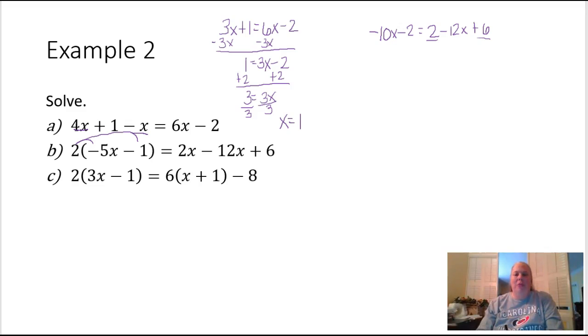Part B take 2. After we distribute the 2 into the parenthesis we have negative 10x minus 2 equals 2x minus 12x plus 6. If we combine our like terms over here, that's going to be this one and this one rather than the 2 and the 6. This is going to give me negative 10x minus 2 equals negative 10x plus 6.